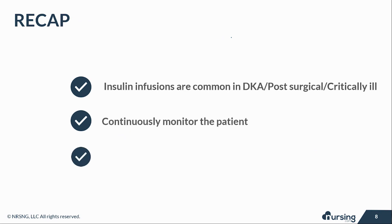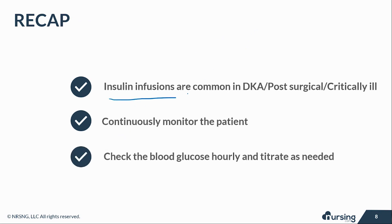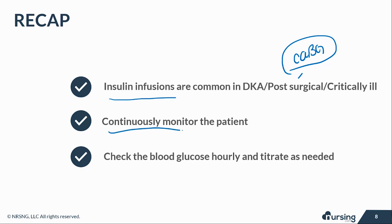To recap: insulin drips are common in ICU patients, DKA patients, and surgical patients. I work in CVICU, and our post-CABG patients — whether diabetic or not — come out with an insulin drip to keep blood sugar levels controlled. Remember, blood sugars can rise under stress, so you want to keep them low to promote healing. Continuously monitor the patient and blood sugars, watch for signs and symptoms of hypoglycemia, check blood glucose hourly, titrate insulin as needed, watch your electrolytes, and continuously check on your patients.